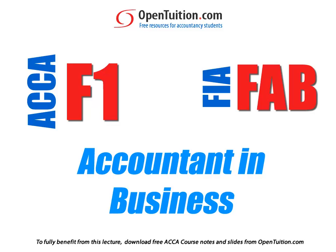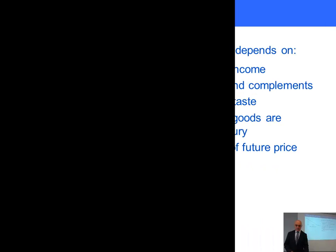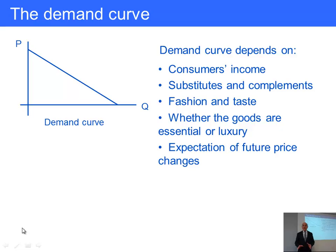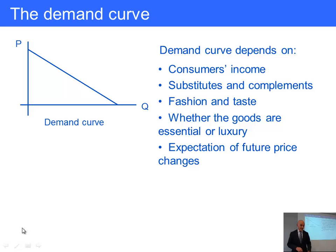This is a lecture from Open Tuition. For the free lecture notes that go with this podcast, please visit opentuition.com. The second section in economics looks at microeconomics, and this considers the price of goods and the quantity which is demanded, how the price of goods might affect the quantity produced, and how a market price and equilibrium price is arrived at.